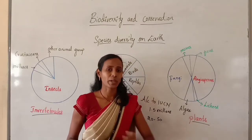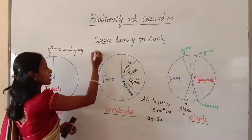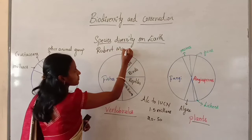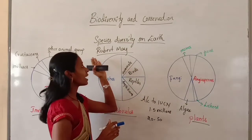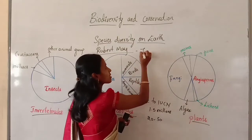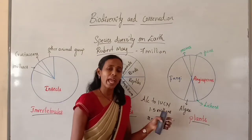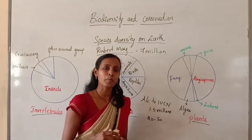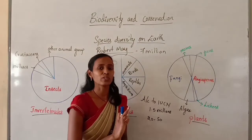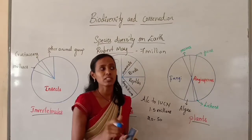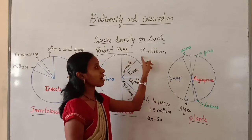The more conservative and scientifically sound estimate was made by a scientist named Robert May. He places the global species diversity at about 7 million. So according to IUCN it is about 1.5 million, with many species yet to be discovered, and Robert May's conservative estimate puts global species diversity at 7 million.